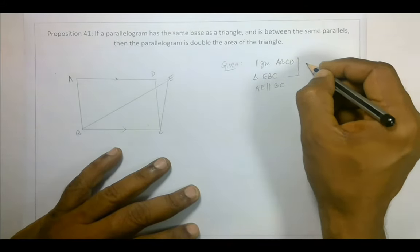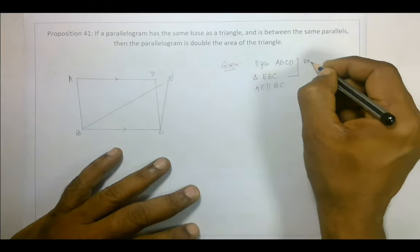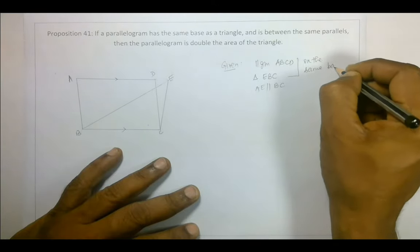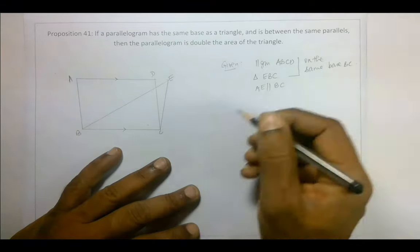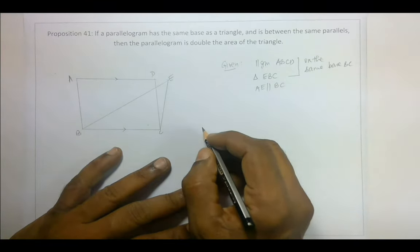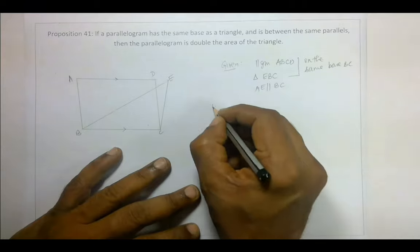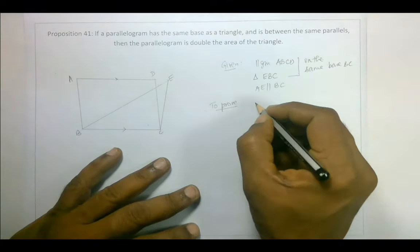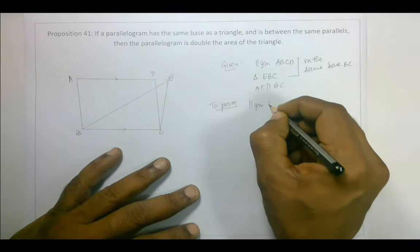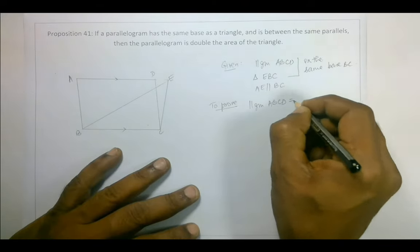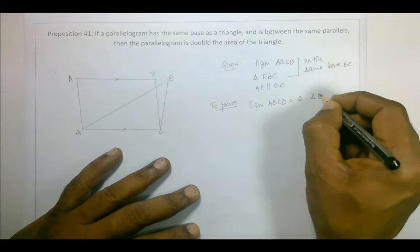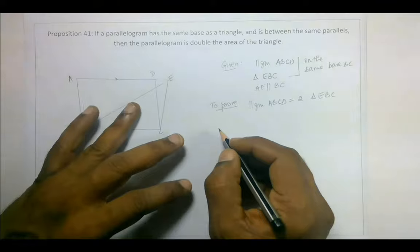What do we have to prove? We have to prove that parallelogram ABCD is equal to two times the area of EBC. So to begin with, let's join A and C.